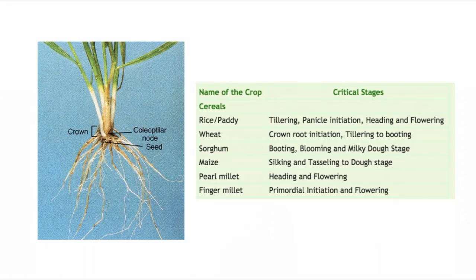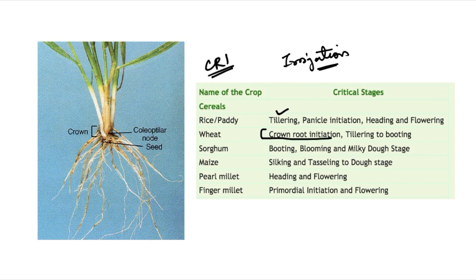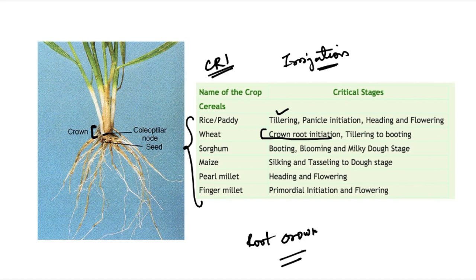Let's look at the irrigation critical stages for different crops. For rice and paddy, tillering is one of the very critical stages. For wheat, crown root initiation (CRI) is a very important critical stage. The root crown is that part of the root system from which the stem arises, making it an important and critical stage for wheat. You can pause the video and take a screenshot of this information.